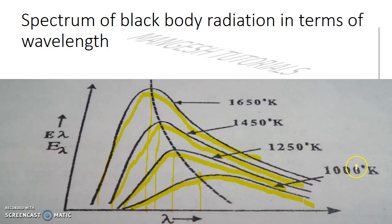Since lambda-max decreases with increasing temperature, they have an inverse relationship. Lambda-max is inversely proportional to temperature, giving us Wien's displacement law: lambda-max × T = constant. The Wien's constant has a value of 2.9 × 10⁻³ meter·kelvin.